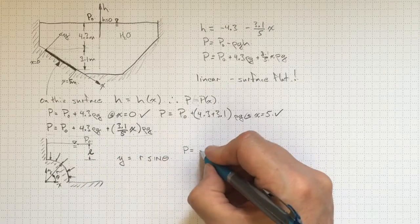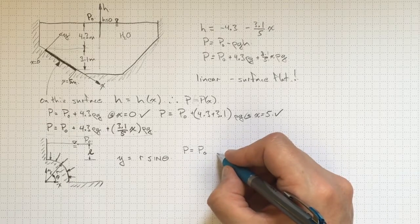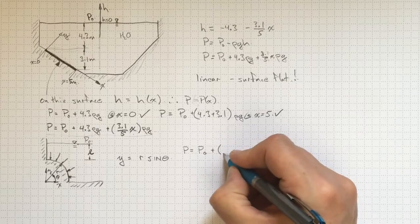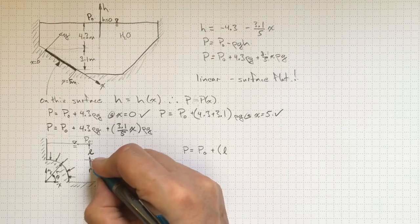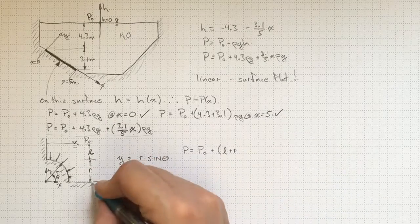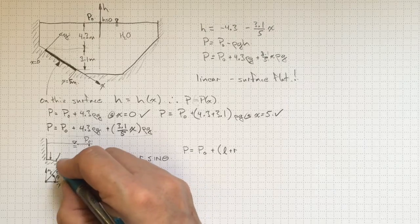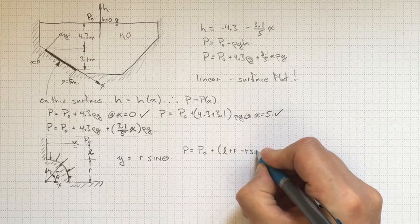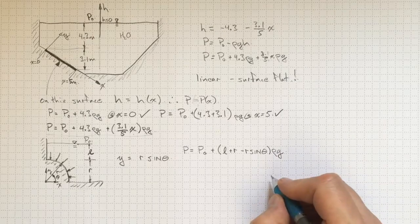So pressure will depend on how far under the water we are. It'll be p-naught plus the distance we are under the water. And the distance we'll be under the water will be L to get down to here. Another r to get down to y equals zero. Minus whatever increase in y we've got as we've wrapped around there in the theta direction. Minus r sine theta times rho g.